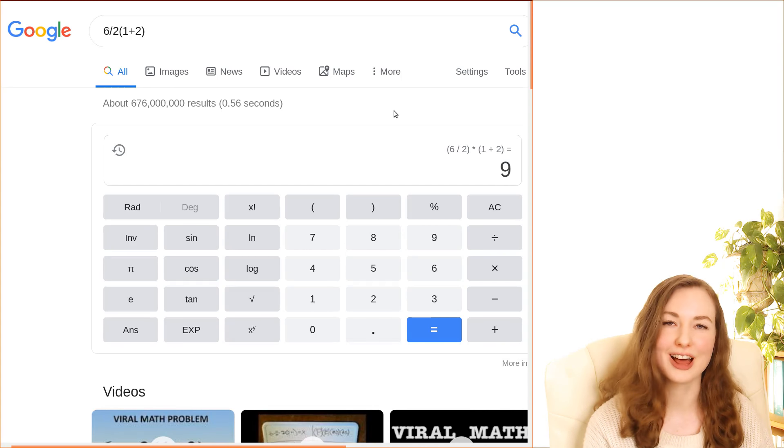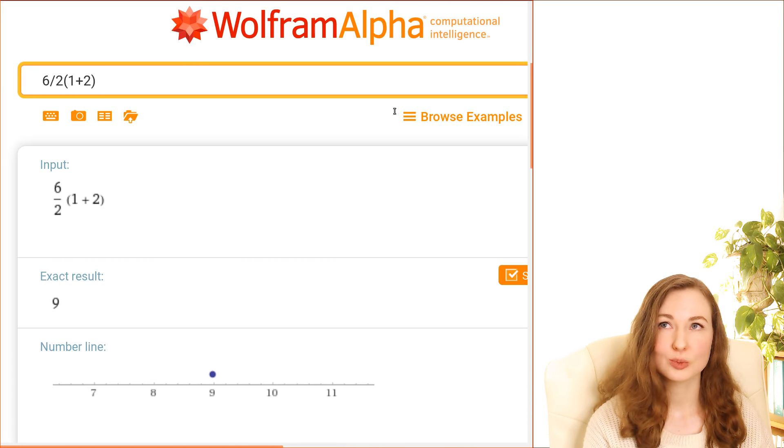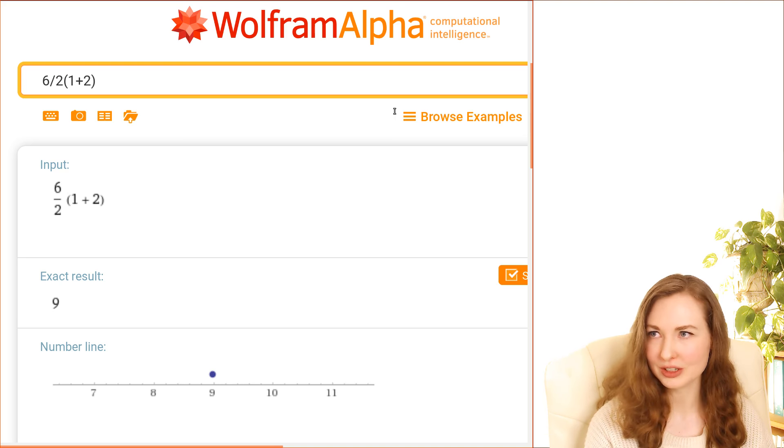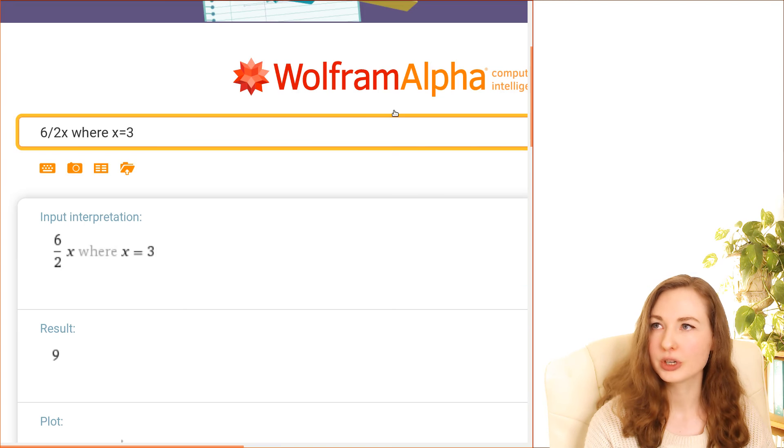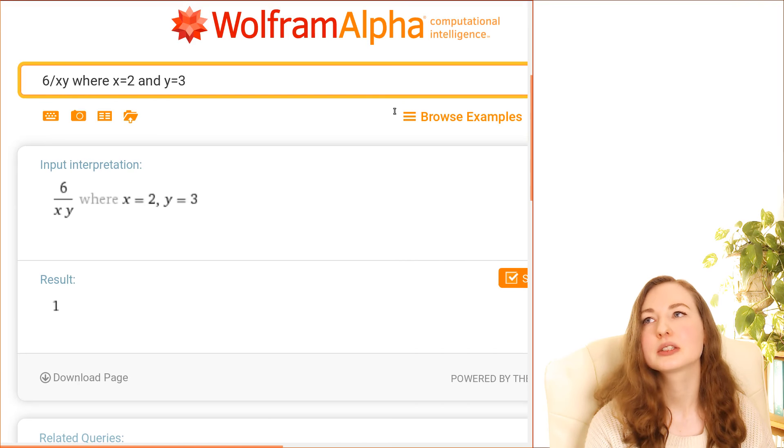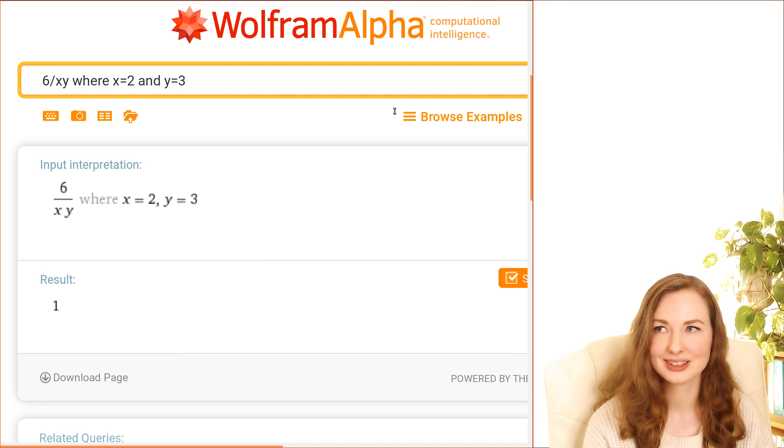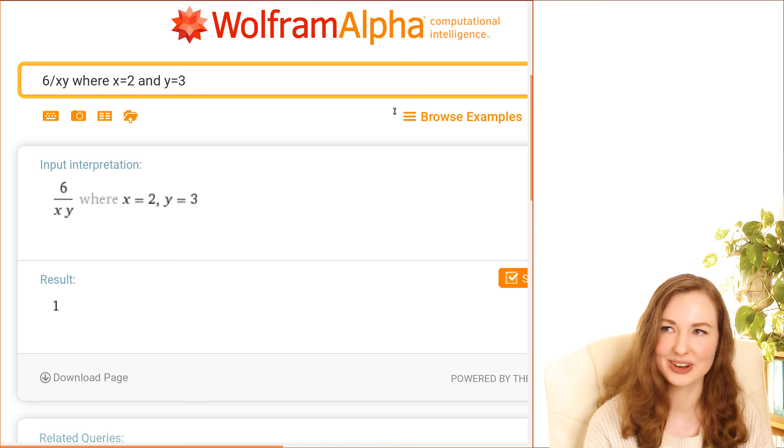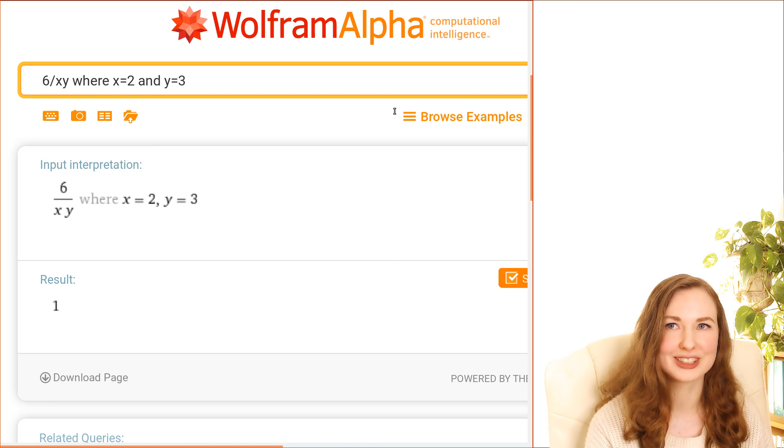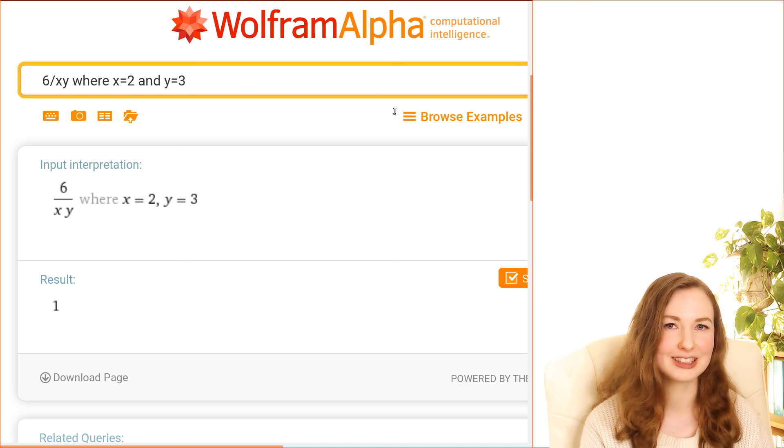As for online calculators, Google Calc follows PEMDAS, but WolframAlpha is really weird because... okay here it's following PEMDAS giving the answer of 9. If you put it in as 6 divided by 2x it's still following PEMDAS, but if you put in 6 divided by xy it will interpret that as like PEJMDAS. It interprets that as 6 divided by x and then divided by y as well and gives the answer of 1. So I'm not sure what kind of priority levels they're working with there, but they're a bit inconsistent.